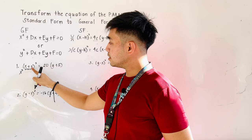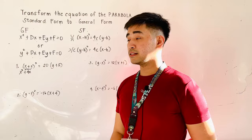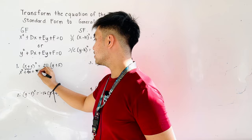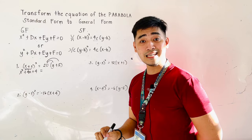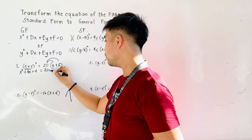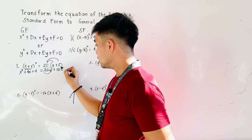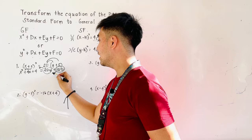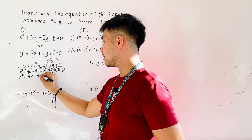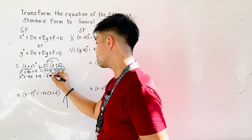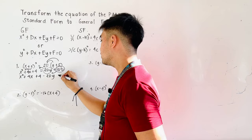2 times 2 is 4. 4 times x, that becomes 4x. And then for the last term, that is 2 times 2, which is 4. Then distribute 20 to the group. Therefore, it becomes 20 times y, we have 20y. 20 times 5, that becomes plus 100. Transfer all the terms from the right side going to the left side. It becomes x squared plus 4x plus 4. Positive 20 going to the left becomes minus 20y. Positive 100 going to the left becomes minus 100, is now equal to 0.